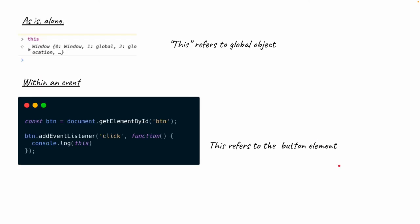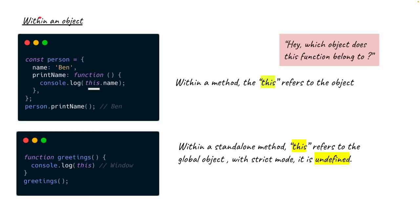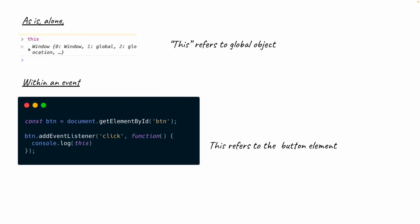Outside of everything — just using this as a standalone keyword — this again refers to the global window object. And within an event handler, for example attaching a click addEventListener to a button element, if we console this, it refers to the button element itself — not to the window, not to an object. So that's how this changes based on where it's used.